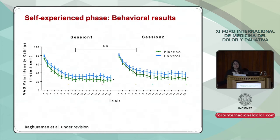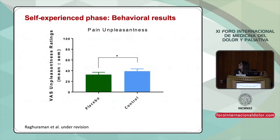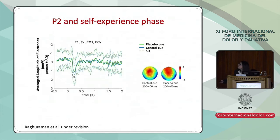La siguiente pregunta fue cómo estaban respondiendo. Después de observar, hicimos las pruebas con las mismas cremas pero con una estimulación térmica. Tuvimos 30 termoestimulaciones y ellos reportaron menos dolor con las cremas de placebo comparado con las de control. También, en cuanto al dolor no placentero — qué tanto los molestaba el estímulo — sentían que la crema verde podía reducir un poco estas molestias. Pero esto no es suficiente, son solo resultados conductuales, y queríamos entender qué sucedía en el cerebro.